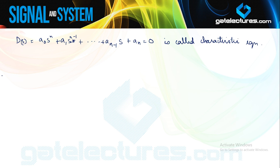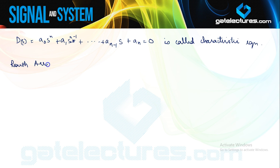Stability of a system is tested by the well-known Routh-Hurwitz method. Using this characteristic equation formed from the denominator polynomial of the system transfer function, we form a Routh array, and by examining the Routh array we judge the stability of the system.